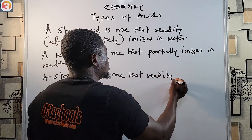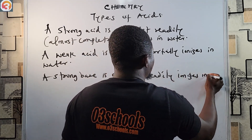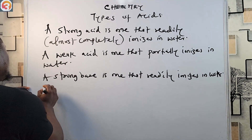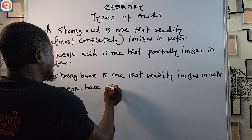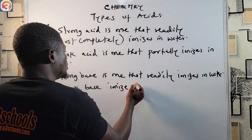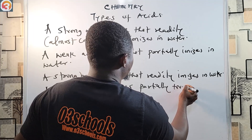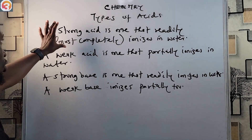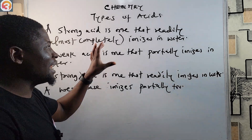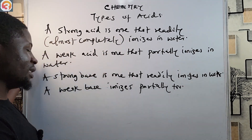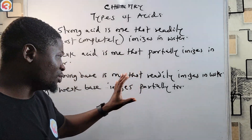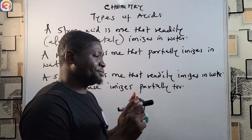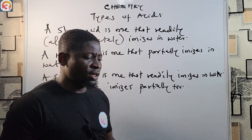Similarly, a strong base is one that readily ionizes in water, while a weak base only partially ionizes in water. So the key difference: strong acids and bases ionize completely or almost completely, while weak acids and bases ionize only partially.